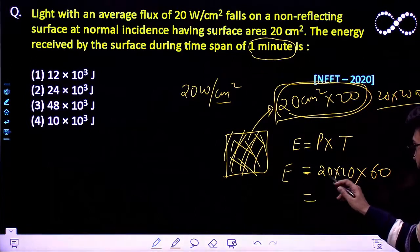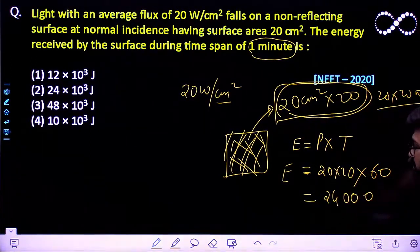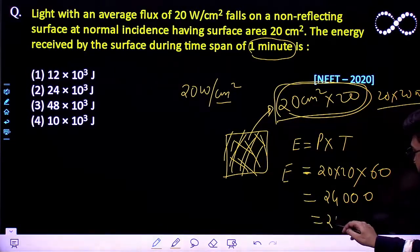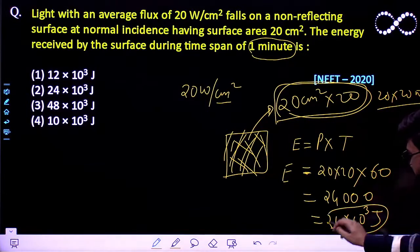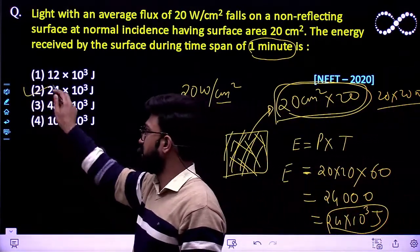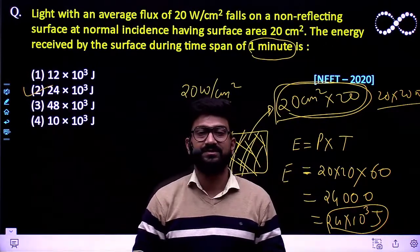So the total answer comes out to be 24,000. So that means 24 into 10 raised to power 3 joule, this is the final answer that we are getting. So that means second would be the correct option that you should get. Okay, I hope this question is clear to everyone. Thank you.